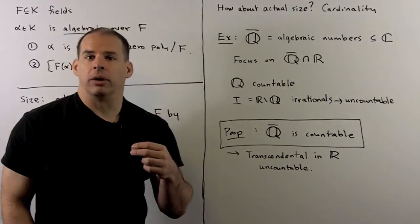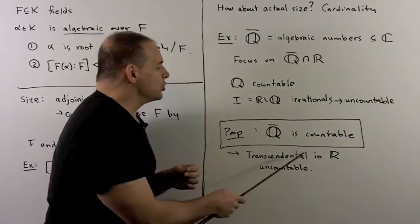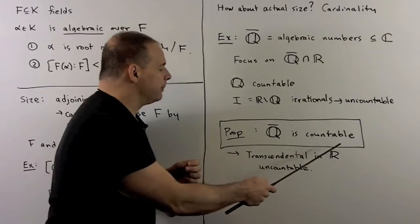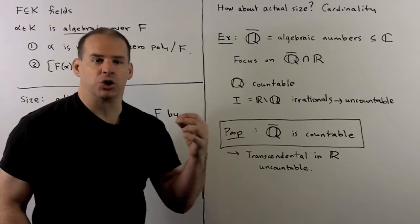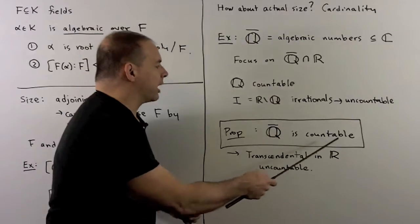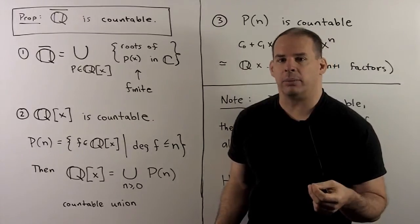We'll show that on the next board, but the first consequence is, if we take the transcendentals in the reals, the complement of this set, that's going to be uncountable. So we haven't gotten much control by going to the algebraic numbers.